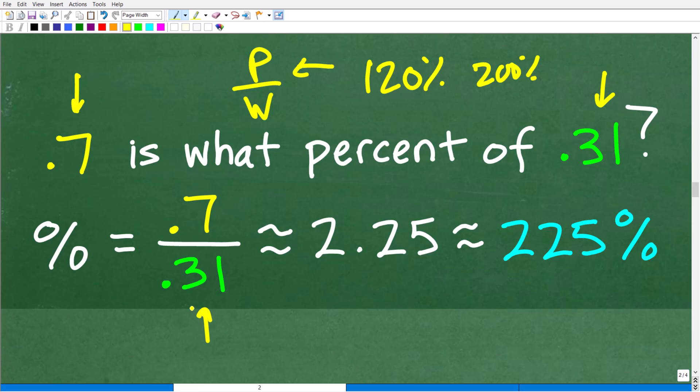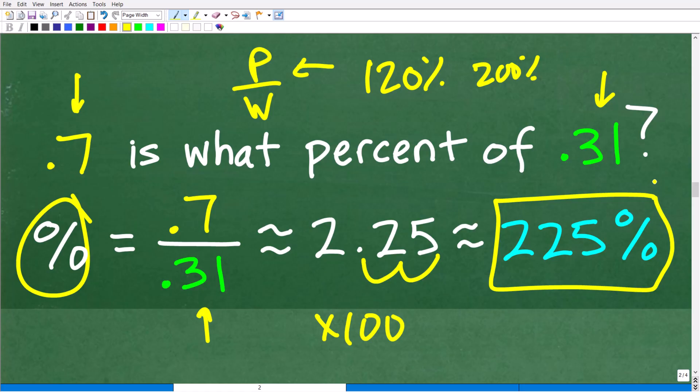So we're just going to follow the setup here. So we have 0.7 divided by 0.31, and when we do this in our calculator, we're going to get a decimal, and I'm just going to round off here approximately 2.25. But we're not done here yet because the question is asking what percent. So I'm going to have to take 2.25 and multiply it by 100, which of course is the same thing as moving the decimal point over two places to the right. So we're going to get approximately 225%.